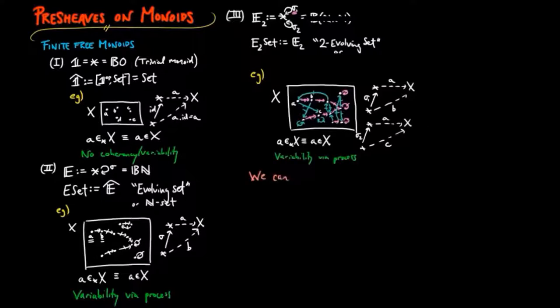Note that examples 1 through 3 can be generalized to a category EN, which is freely generated by N non-identity morphisms. Then a container of EN sets would have figures which have N different processes producing subsequent figures.